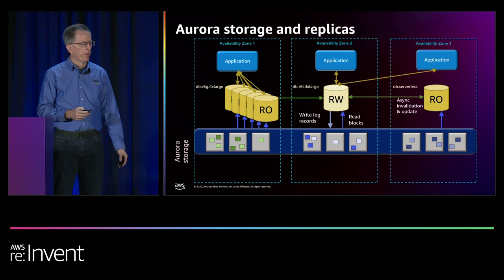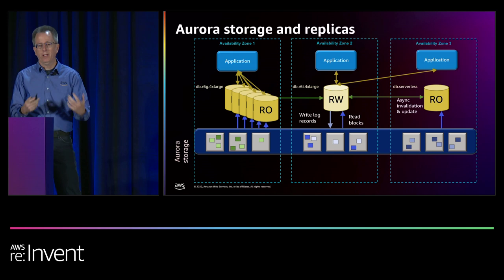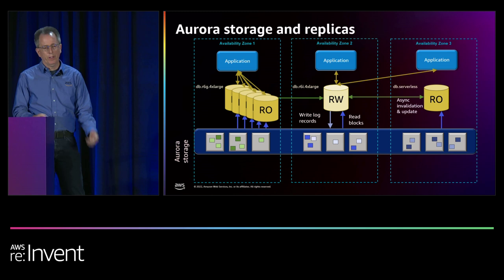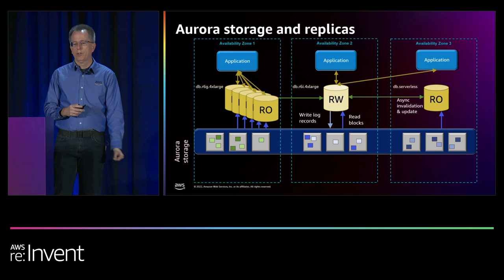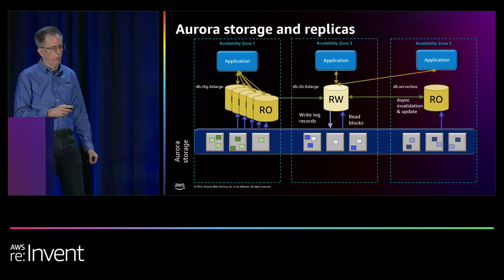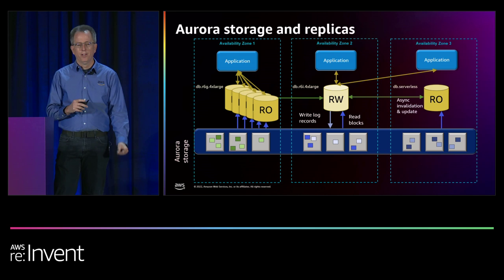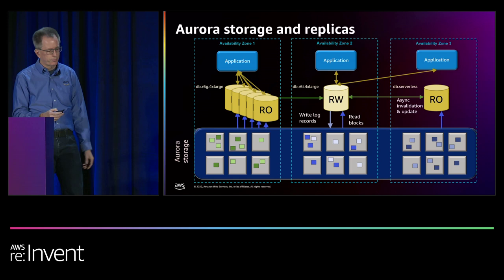Each instance can be a different size or different instance family. We recommend the same ones for failover, but if you have a read application you can have something different. I'm showing an R6G 4XL — that's our Graviton 2 processor — the new 6i Intel versions that go up to 32XL, and on the far side db.serverless, our Serverless v2 option. You can mix and match different instance sizes and families all in one cluster.